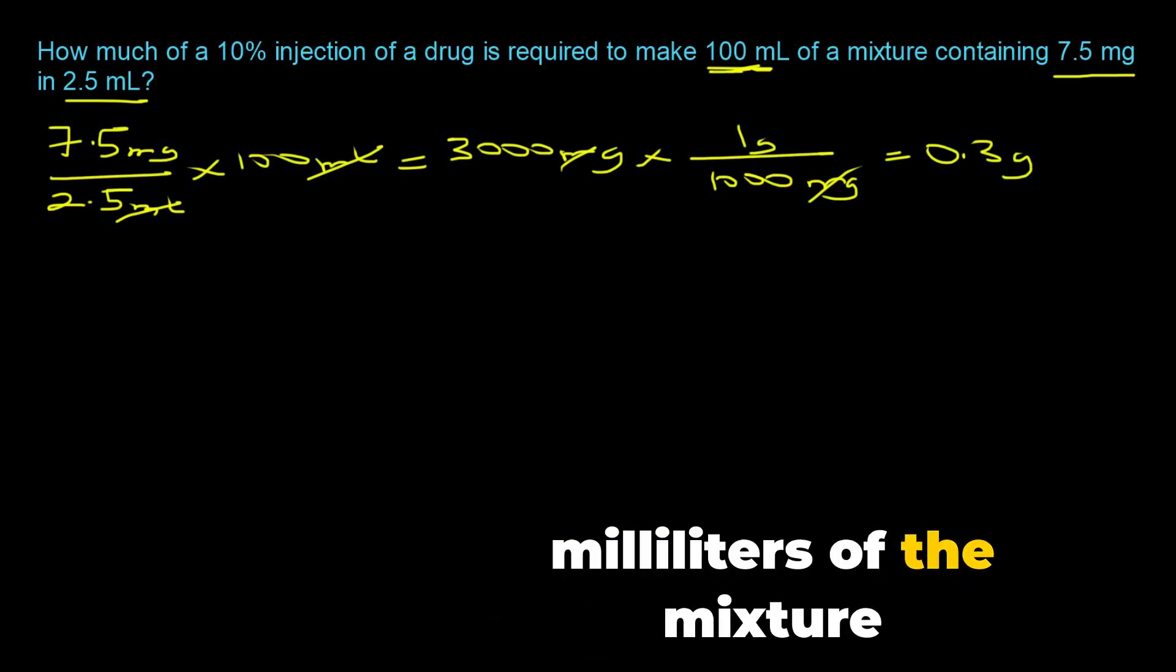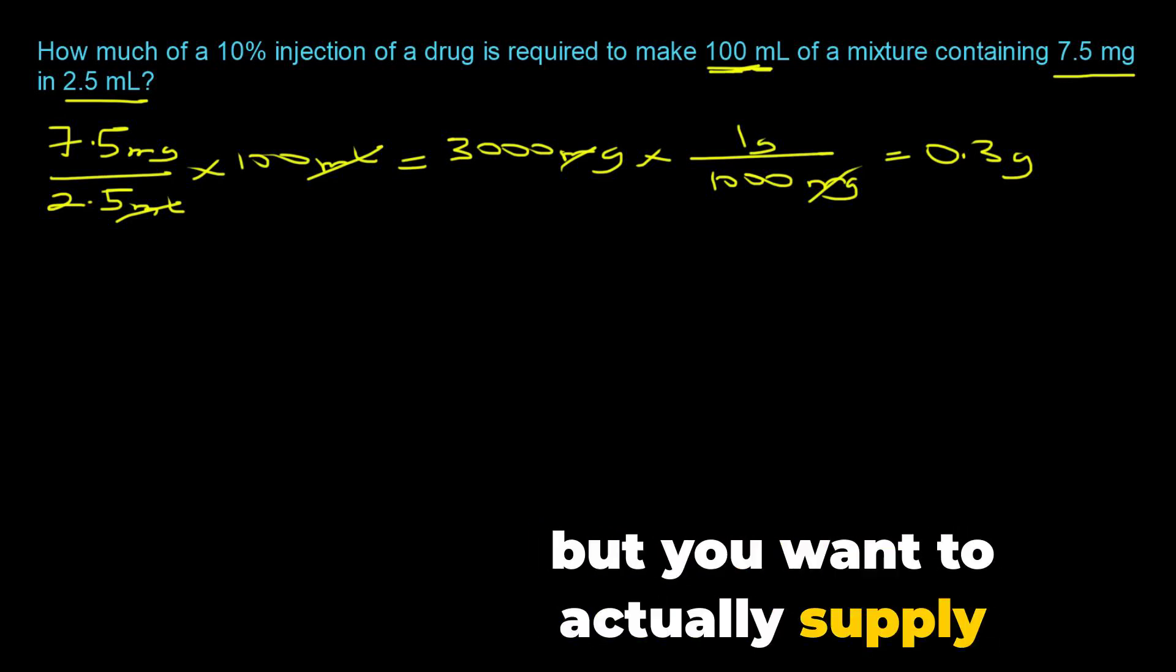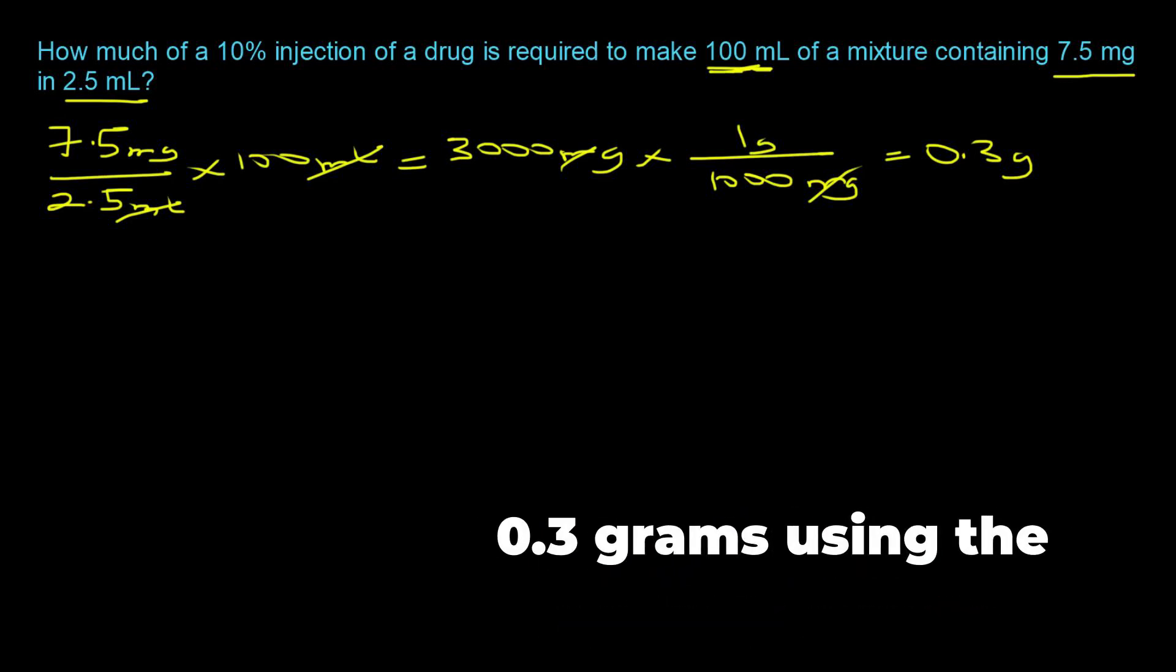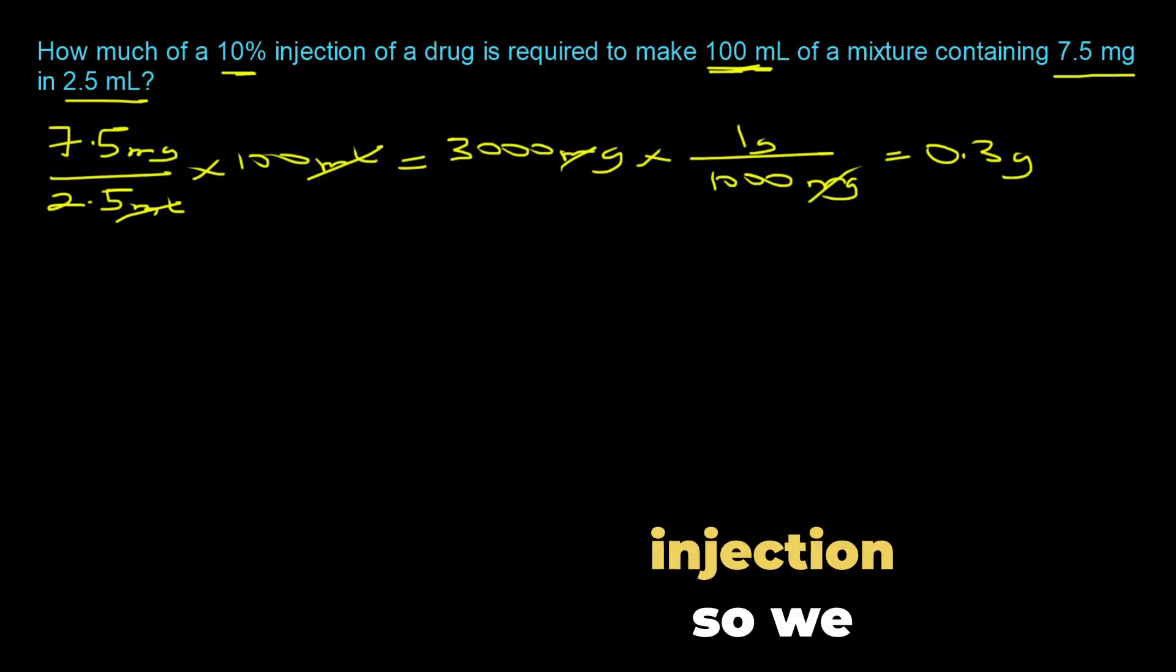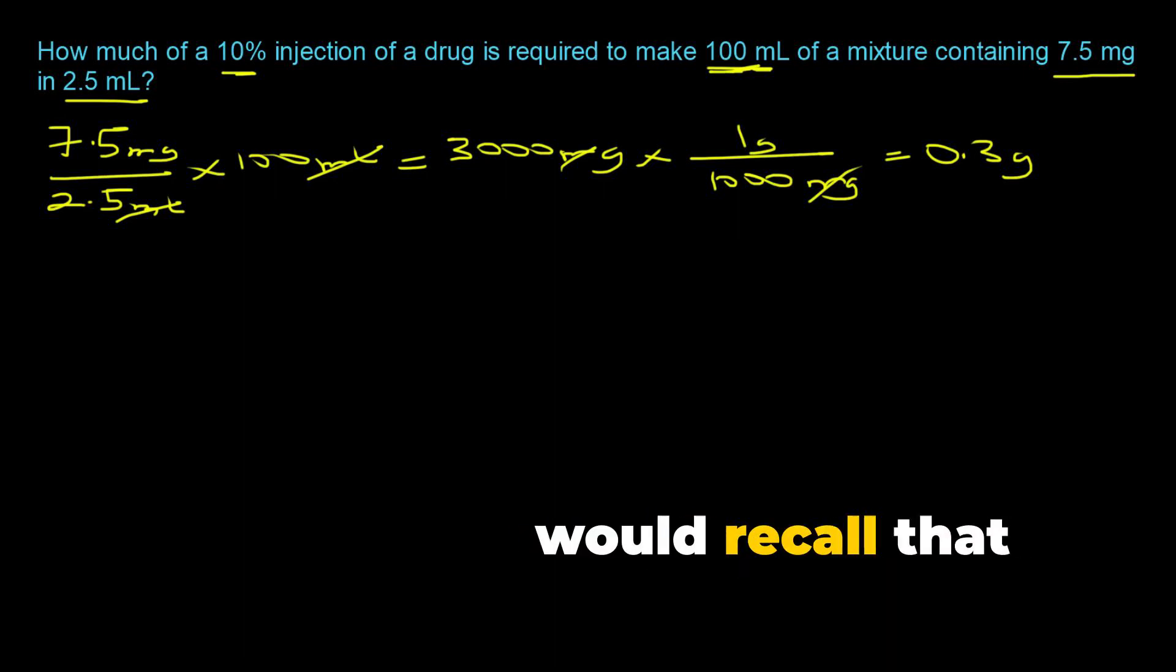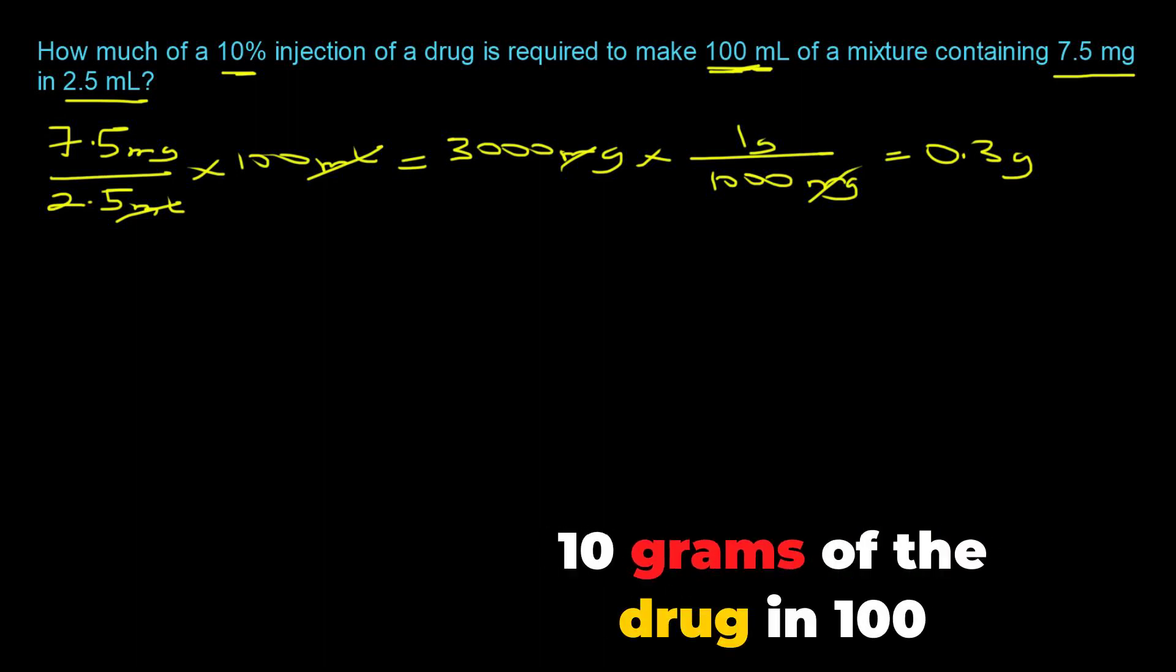So we actually have 0.3 grams of the drug in 100 milliliters of the mixture. But we want to actually supply this 0.3 grams using the 10 percent injection. So we would recall that 10 percent is 10 grams in 100 milliliters.